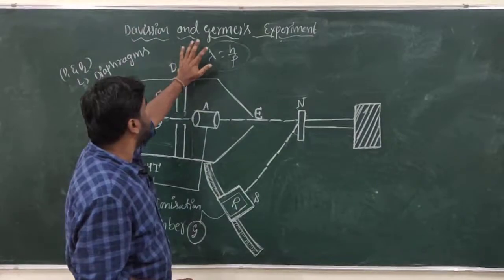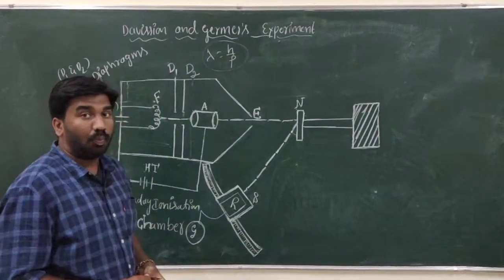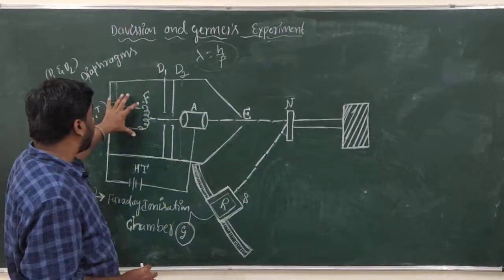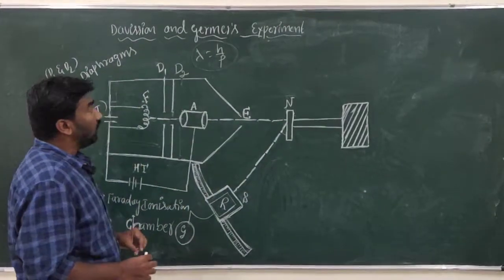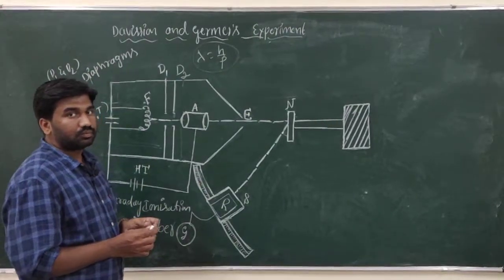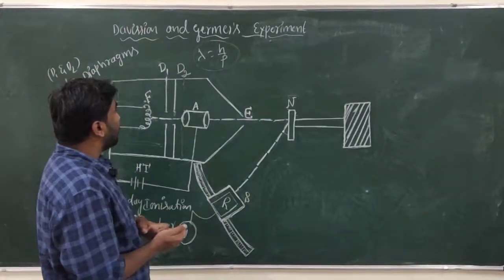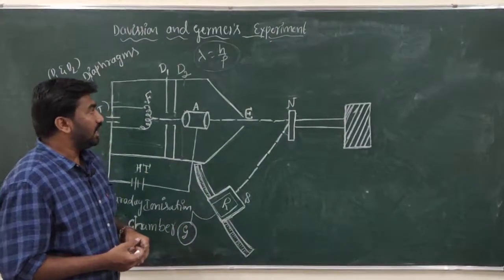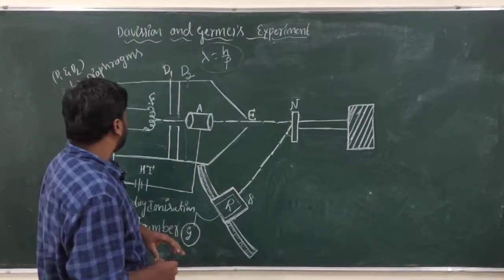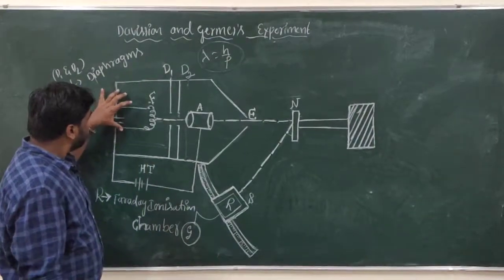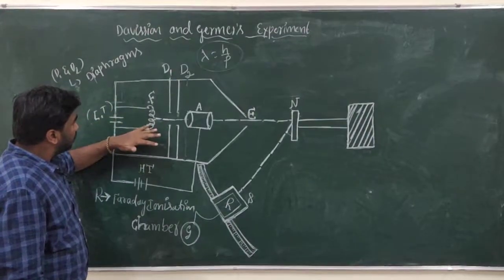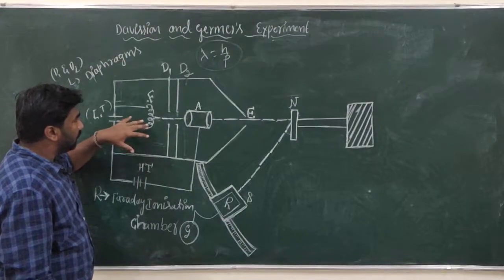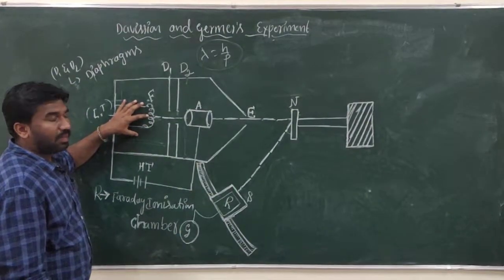Davisson and Germer are two American scientists who developed and operated this experimental setup. This setup helps to calculate the wavelength of an electron, so we can conclude that an electron also behaves as both a wave and a particle. Here we have an electron gun, and this electron gun produces thermal electrons by heating a filament.